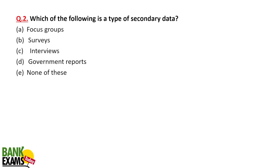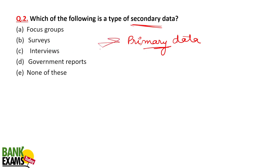Question two: which of the following is a type of secondary data? Primary data means you are going to the population or target market yourself and collecting data — for example, making a questionnaire, having people fill forms, or sending emails. That is primary data. Secondary data means you are using a third party's data — somebody has already done the research and you are making use of that data. So government reports are secondary data. Focus groups, surveys, and interviews where you put in your own effort to collect data are primary data.